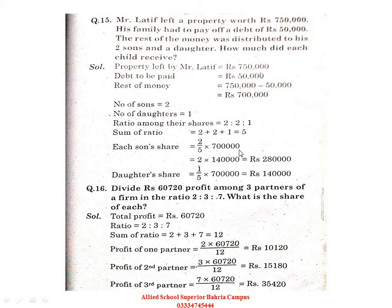Multiply by the total amount. The answer coming is 2 lakh 80 thousand. For the second: 2/5 × 7 lakh. Each son's share — and then the daughter's share: 1 divided by sum of ratio 5, multiplied by the total amount 7 lakh. We get 1 lakh 40 thousand. So 2 lakh 80 thousand — you can see it is double as compared to 1 lakh 40 thousand — meaning each son gets double as compared to his sister, the daughter.